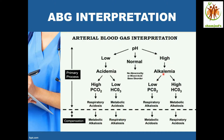If the pH is high, it is alkalemia. Look at the PCO2 — if it is low, it is respiratory alkalosis, and the compensatory response is metabolic acidosis. If the bicarbonate is high, it is metabolic alkalosis, and it is compensated with respiratory acidosis.